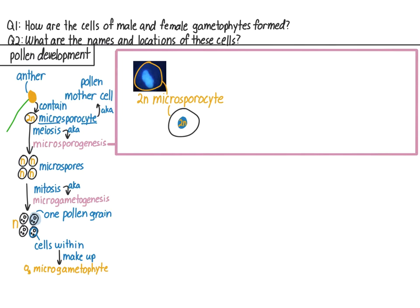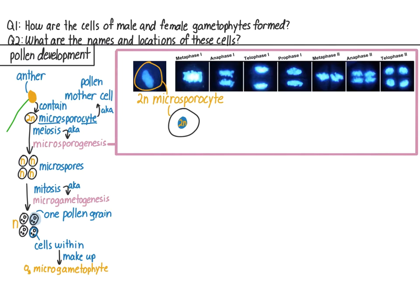The microsporocyte enters meiosis. By metaphase I, the chromosomes have condensed and lined up. During meiosis I and II, four chromosome sets are produced. But instead of each set being sorted into four separate cells, like with sperm production in humans, each of the four sets of chromosomes is sorted into its own nucleus. But the four nuclei stay within the same cell. So, instead of four separate cells, we have four haploid nuclei all within one cell.